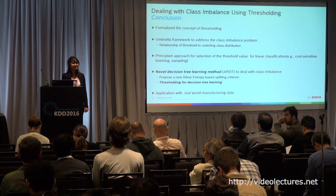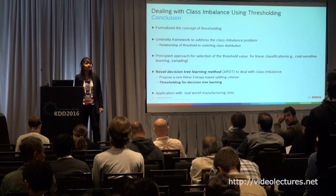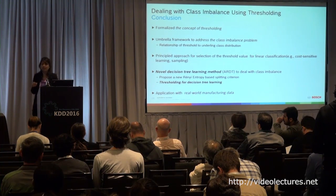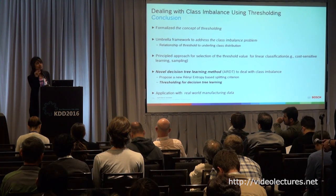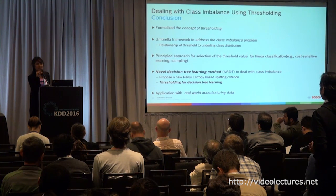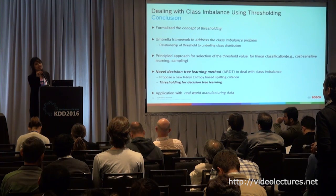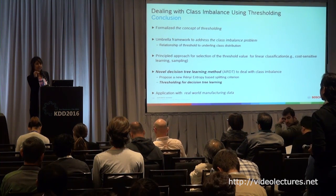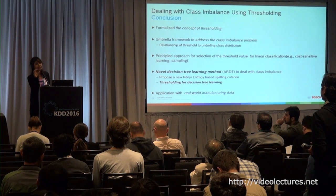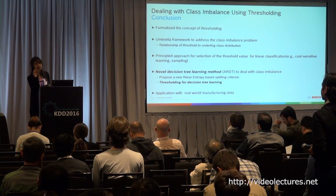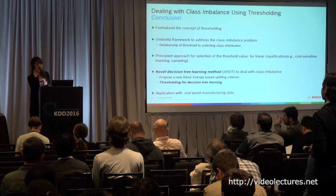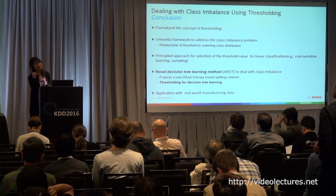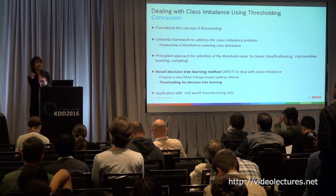Question: how does the accuracy of the model depend on alpha? The speaker responded: it depends on which classifier you're using. In linear classification, we could theoretically show the dependence on alpha, and we showed that the best alpha is dependent upon the class distribution — the ratio of the classes. For nonlinear trees, we've done only an empirical evaluation and don't have a theoretical guarantee yet.